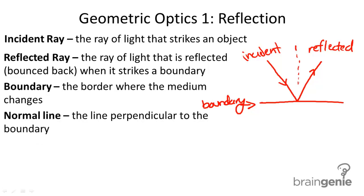The normal line is the line perpendicular to the boundary, so an imaginary line that's perpendicular and makes a right angle with the boundary.